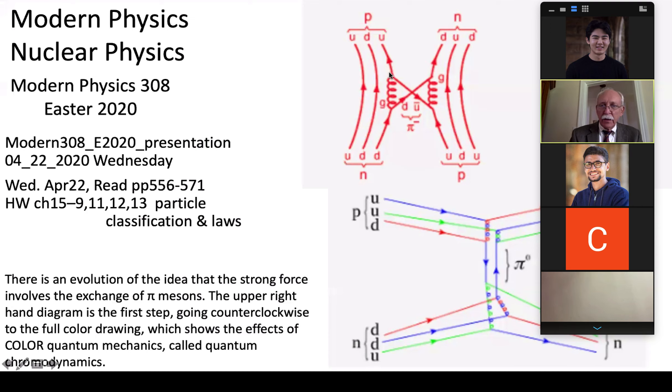Then we had to add color to these because we were having a problem with the two U's and the two D's having the same set of quantum numbers in the proton neutron which is not allowed so they had to invent another quantum number called the color.